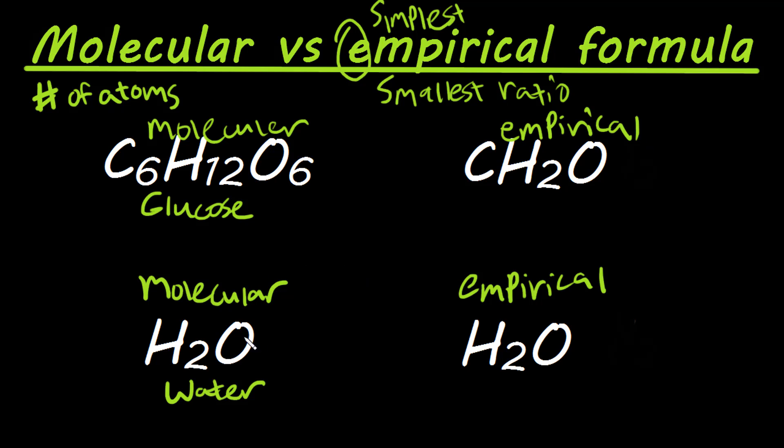And so once again, the main difference is that for a certain molecule, this is going to be their molecular formula, and it shows you each of the individual atoms that are in that certain molecule. And an empirical formula is going to show you the smallest ratio of those atoms together. And it might be different than the molecular formula, or it could be the same as well.